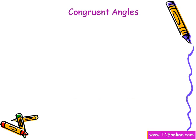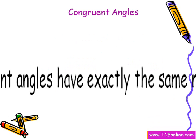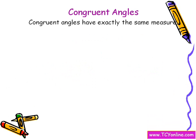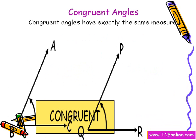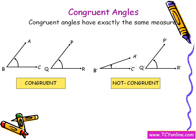Now let's learn about congruent angles. Congruent angles are those angles which have exactly the same measure. For example, angle ABC and angle PQR are said to be congruent because they have the same measure. While angle ABC is not congruent to angle PQR in the second example.